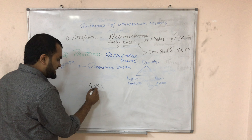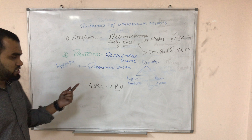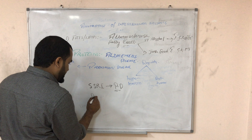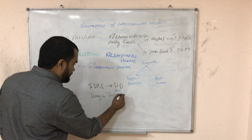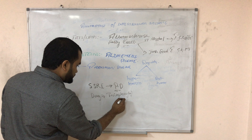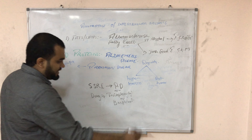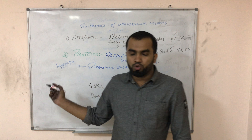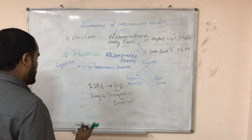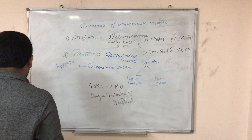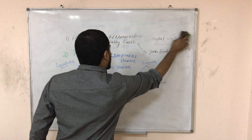Parkinson's disease can also be caused by SSRI drugs (serotonin reuptake inhibitors) as a side effect. In that case you will not give levodopa; the drug of choice is trihexyphenidyl, also called benzhexol. So SSRI-induced Parkinsonism is treated with trihexyphenidyl or benzhexol.